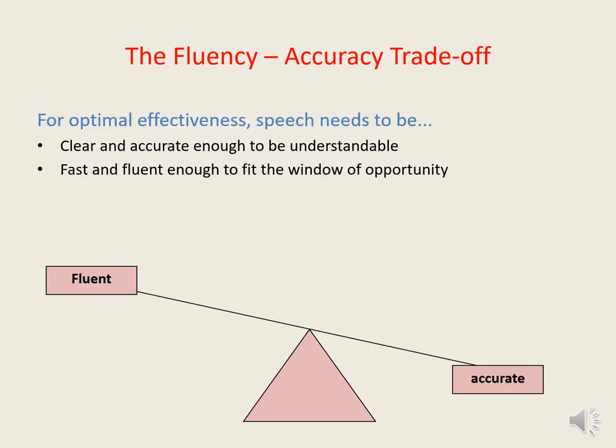For optimal effectiveness, speech needs to be both clear and accurate enough to be understandable, yet also fast and fluent enough to fit within the window of opportunity. So although it's sometimes important to be clear and accurate, it can be counterproductive to make too much effort to speak clearly and accurately if one's speech becomes very slow and disfluent as a result. Indeed, when speaking — especially in situations where there's time pressure and a limited window of opportunity to get a message across — people who stammer would often do better to make a compromise or trade-off and accept a somewhat lower level of clarity and accuracy than they might otherwise strive for.